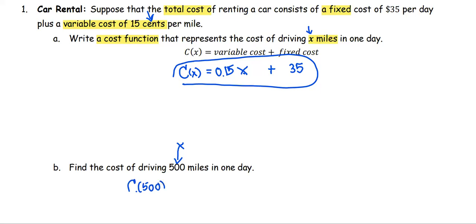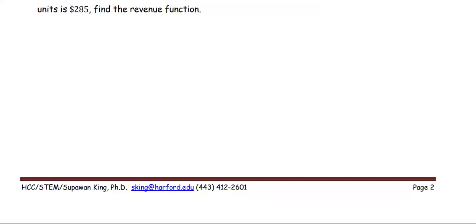So C(500) equals 0.15 multiplied by x, which is 500, plus 35. And then we just simplify 0.15 times 500 to be 75.